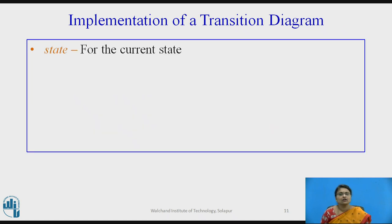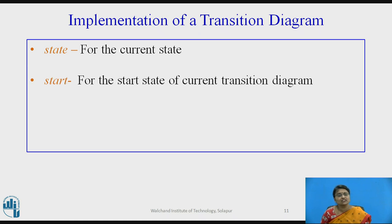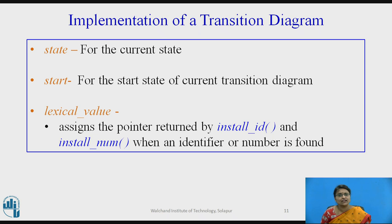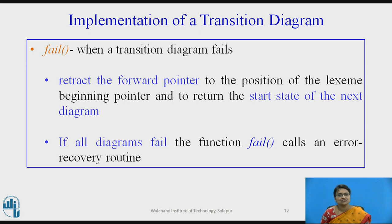We are going to implement that. The variable 'state' stores the current state of the transition diagram. The variable 'start' holds the start state of the current transition diagram, since there are many diagrams. 'lexical_value' stores the value returned by installID or installNum. The 'fail' function is called whenever a failure occurs — it retracts the forward pointer to the beginning of the lexeme, starts the next transition diagram, and if all transition diagrams fail, it calls the error recovery routine.